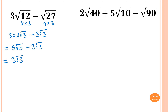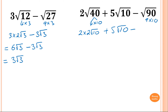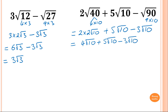This next one has one extra term but the same process. We have root 40 plus 5 root 10 minus root 90. For 40: that's 4 times 10, so root 4 is 2, giving 2 root 10. For root 10: 10 is 2 and 5, neither are square numbers, so it stays as 5 root 10. For 90: that's 9 times 10, so root 9 is 3, giving 3 root 10. Now collecting like terms: 4 root 10 plus 5 root 10 minus 3 root 10. 4 plus 5 is 9, minus 3 is 6, so the answer is 6 square root of 10.